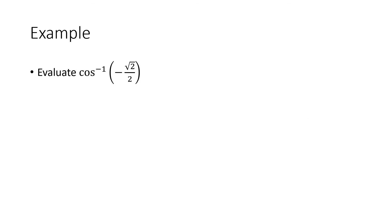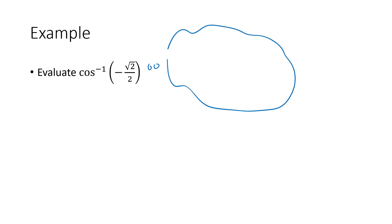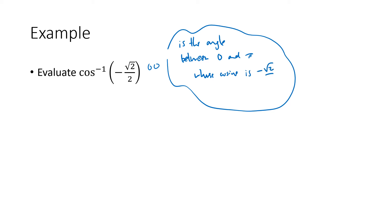Let's evaluate the inverse cosine of negative square root of 2 over 2. This is the angle between 0 and pi whose cosine is negative square root of 2 over 2.